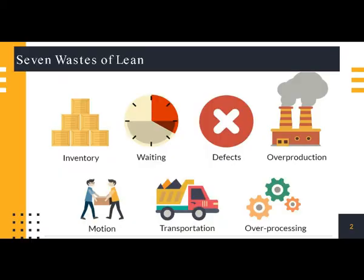The seven wastes of lean manufacturing are what we are aiming to remove from our processes by removing the causes directly. The seven wastes of lean manufacturing are: number one, transport; number two, inventory; number three, motion; number four, waiting; number five, over-processing; number six, overproduction; number seven, defects.